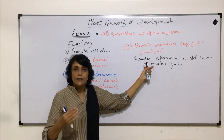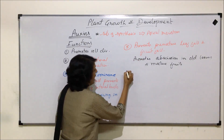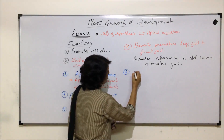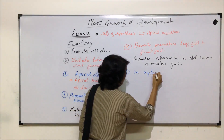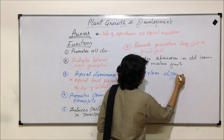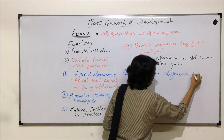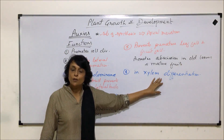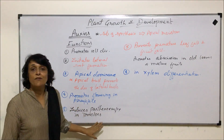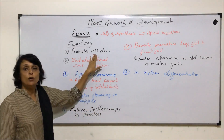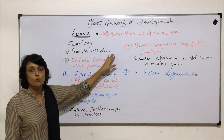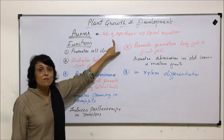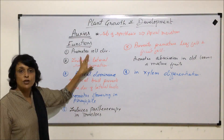The next function of auxin is that it helps in xylem differentiation — during tissue differentiation it helps in xylem formation. These are the main functions of auxins. It promotes cell division — whenever auxin is available, cells divide, and as auxins are present in the apical meristem, meristematic cells continuously divide.